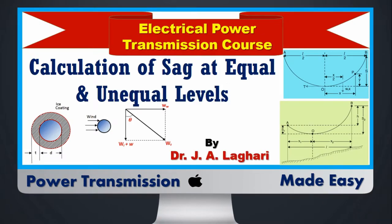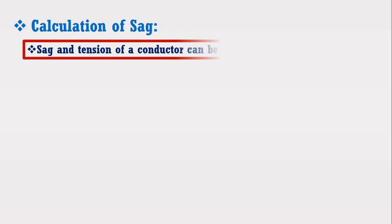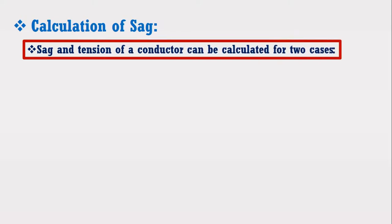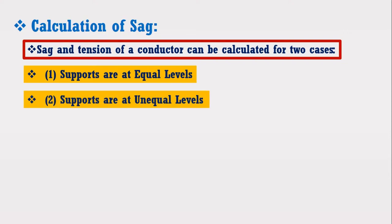Sag and tension of a conductor can be calculated for two cases: first, when the supports are at equal levels, and second, when the supports are at unequal levels.